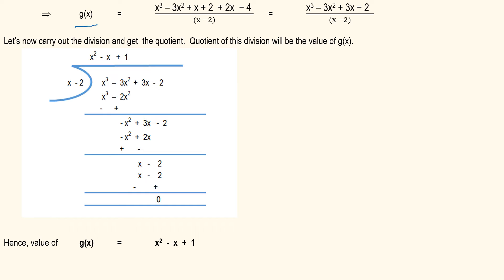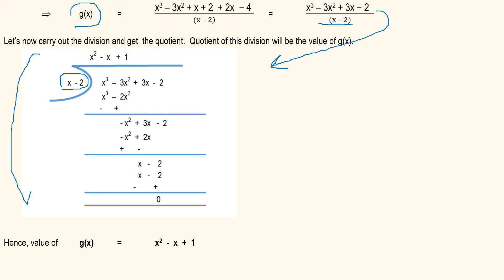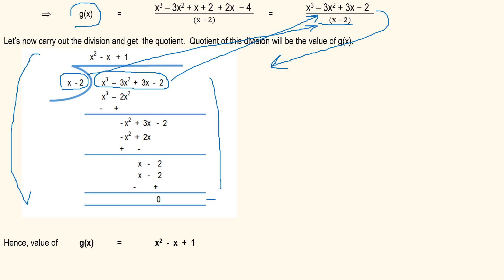So now we know that the g(x) value can be obtained by dividing the polynomial x³ - 3x² + 3x - 2 by x - 2. Let's carry out the complete division — the steps are elaborated in this diagram. Here x - 2 is our divisor and x³ - 3x² + 3x - 2 is our dividend. Once we solve this, we get a remainder of 0 and our quotient is x² - x + 1, and that is the value of g(x).